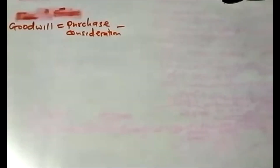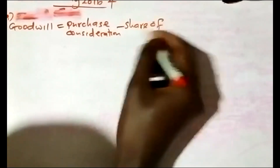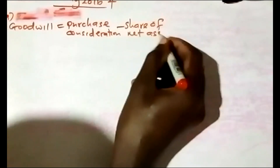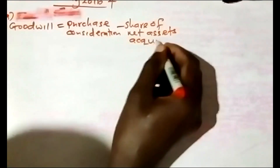We are doing the May 2016 Question 4. Starting with the first requirement, which is to compute goodwill. Goodwill equals purchase consideration minus share of net assets acquired.